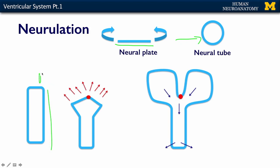The front part is going to be your brain, and the bottom part is going to be your spinal cord. This is then going to progress, and the brain part of the long neural tube is going to grow really, really fast.